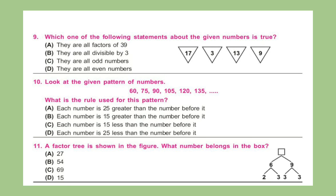Question 9: Which one of the following statements about the given numbers is true? The numbers are given here. Question 10: Look at the given pattern of numbers: 60, 75, 90, 105, 120, 135. What is the rule used for this pattern? Question 11: A factor tree is shown in the figure. What number belongs in the box?